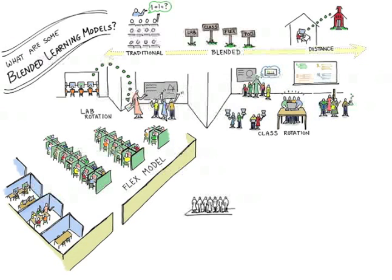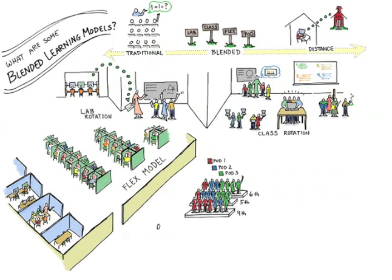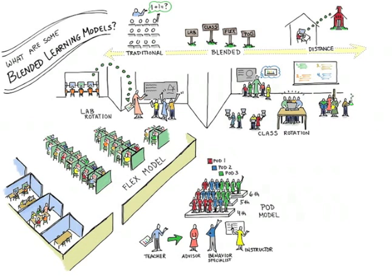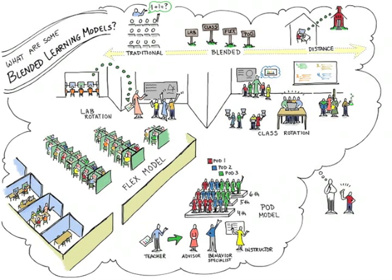One of the newer models is the pod concept. Essentially, it's a school within a school, and each pod might have multiple grade levels. In this model, the role of the teacher may be redefined and broken out into discrete roles: an advisor, a behavior specialist, or an instructor to support each pod. All of these models are rethinking the traditional school, giving students more control over their learning and providing students with targeted instruction.